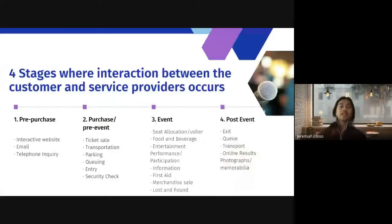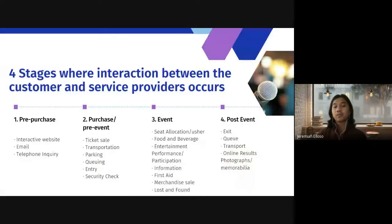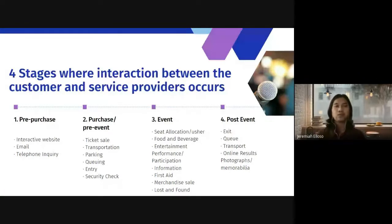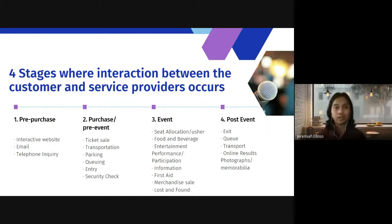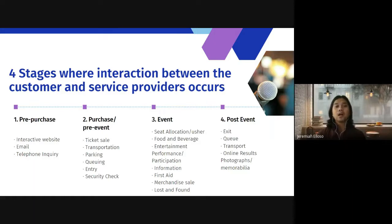At this point we discuss the four stages where interaction between customer and service provider occurs. The first stage is pre-purchase. During this stage, you have to think of how you are going to catch the attention of your audience. Different events have different types of audiences, but regardless you have to tease your audience and call their attention so they will purchase a ticket or attend your event. Activities can include an interactive website — the World Wide Web is a very vital tool during the pre-purchase stage of marketing.